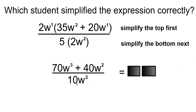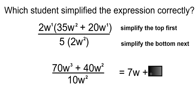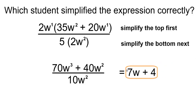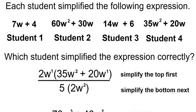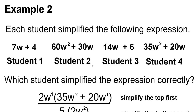70 divided by 10 is 7. And W to the 3 divided by W to the 2 means you subtract, so that's W to the 1, which is just W. Plus 40 divided by 10 is 4. And W to the 2 divided by W to the 2 is W to the 0, which means they cancel. So the final answer will be 7W plus 4. And the student that had 7W plus 4 will be student number 1.